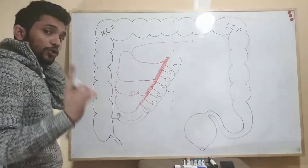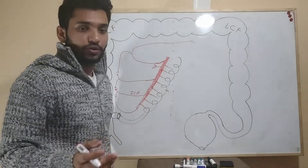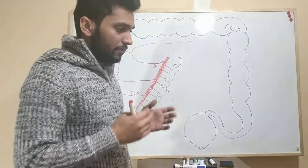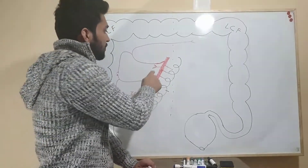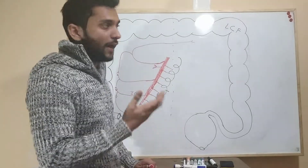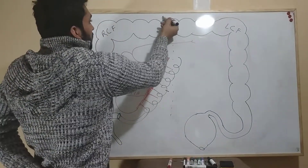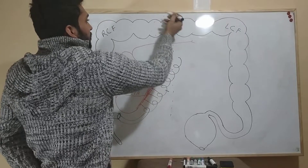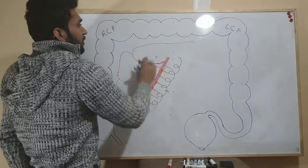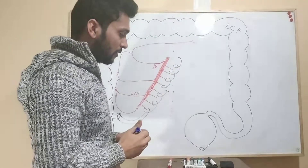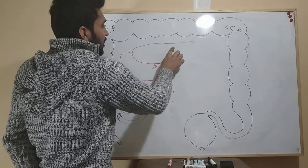Another very important branch is the inferior pancreaticoduodenal artery, which gives blood supply to the pancreas and the duodenum. The duodenum curves around, and the pancreas lies in the mid portion of the duodenum, so this artery supplies both the pancreas and the duodenum — that is why it is named the pancreaticoduodenal artery.